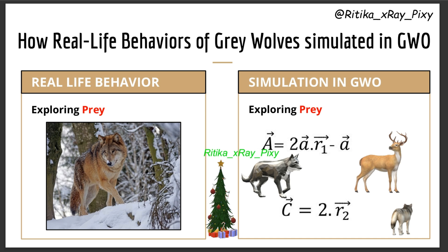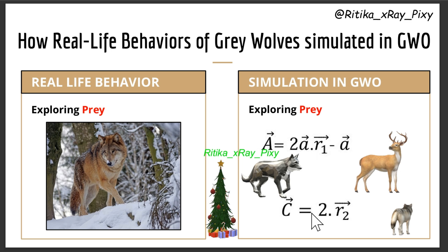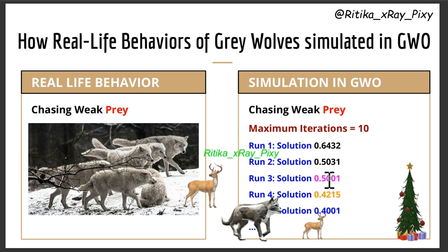Next point: exploring prey. In real life during hunting, all wolves search for prey across a wide area in different directions. In this algorithm, to simulate this behavior, we use two parameters A and C. These allow us to control wolf movement and enable exploration of the search space.